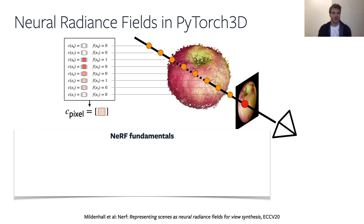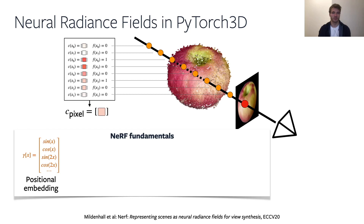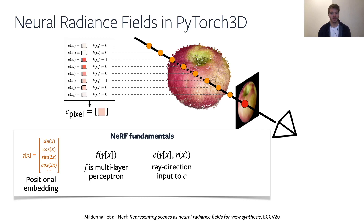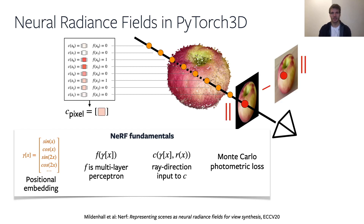The first trick is to transform the raw 3D coordinates into a high-dimensional representation suitable for processing with deep networks. This is called positional embedding and consists of stacking the harmonic functions of the individual point coordinates. The second trick is representing the occupancy and color functions with an MLP. Next, in order to allow modeling of viewpoint-dependent effects, the MLP takes as input the direction of a given ray for each input 3D point. Finally, because the rendering pipeline is very memory heavy, we only sample a random set of 2D locations in the image for which we evaluate the photometric loss that supervises the training.